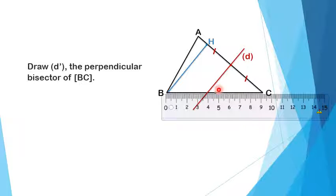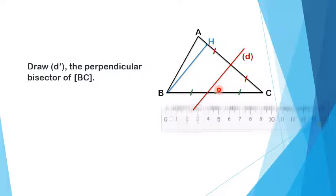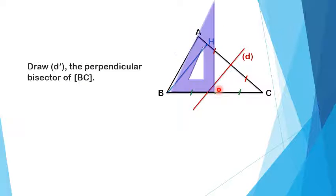Now at this midpoint I have to draw the perpendicular, perpendicular to a segment at its midpoint. So I'm drawing the perpendicular bisector of BC and I have to name it D prime.